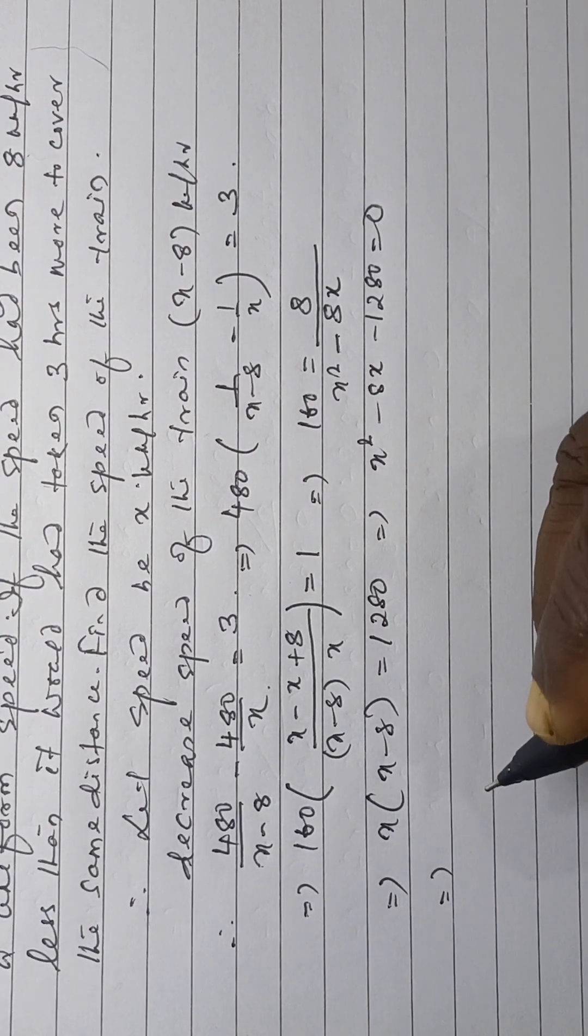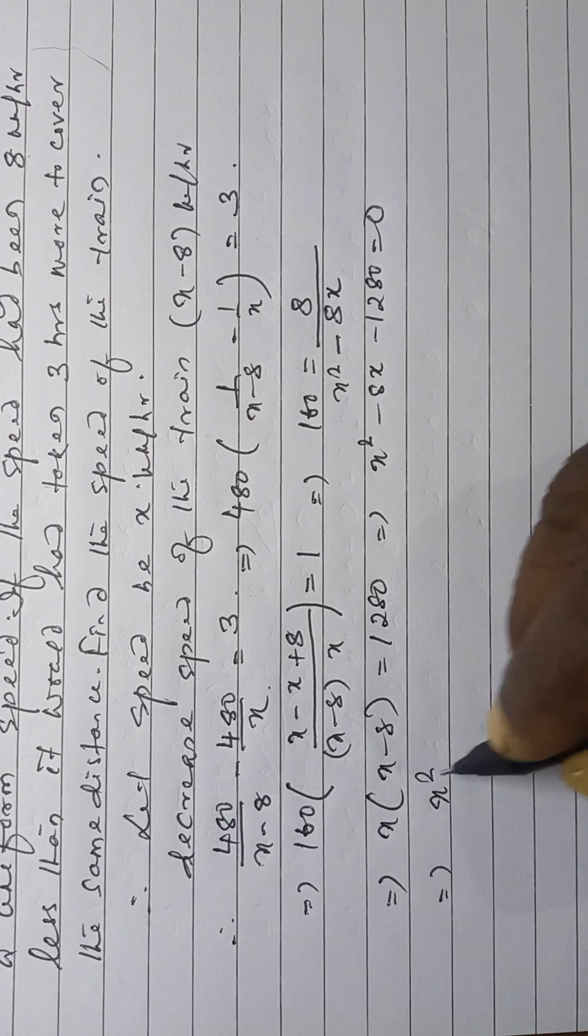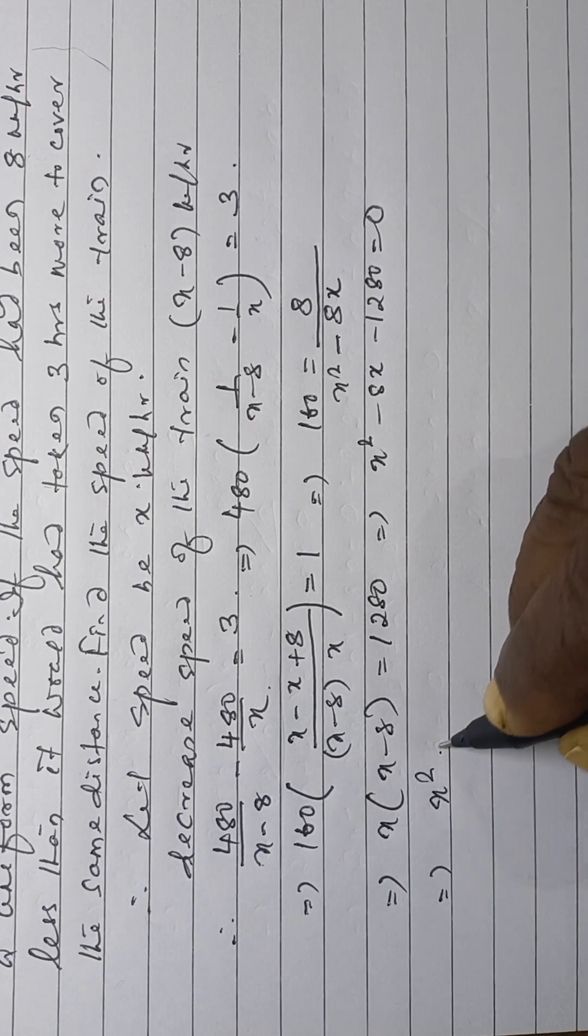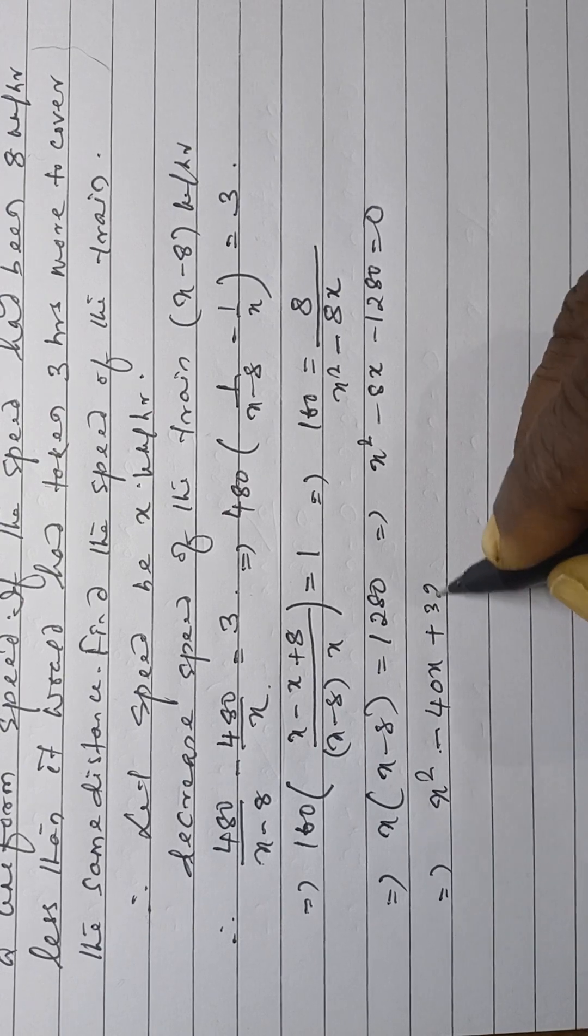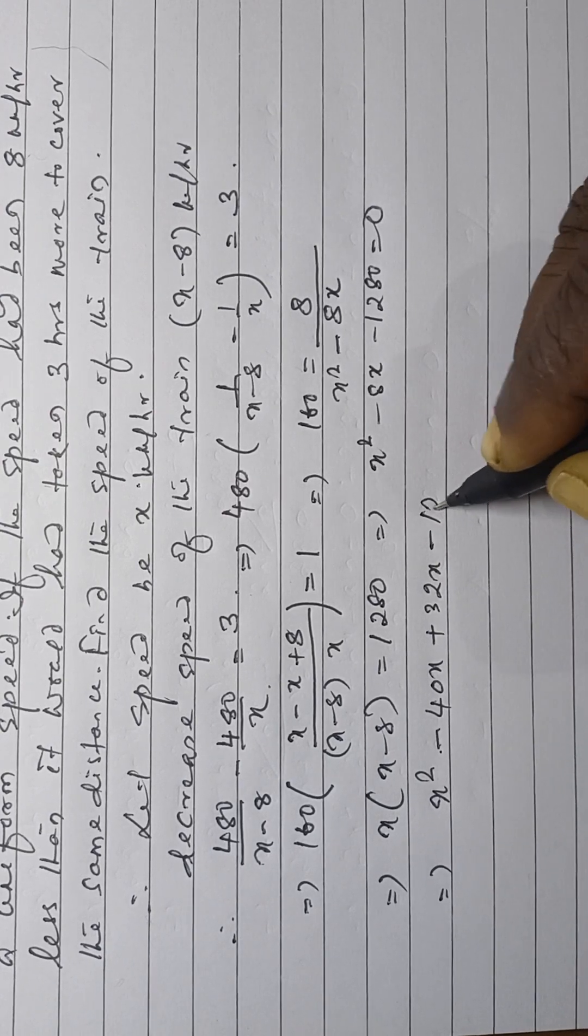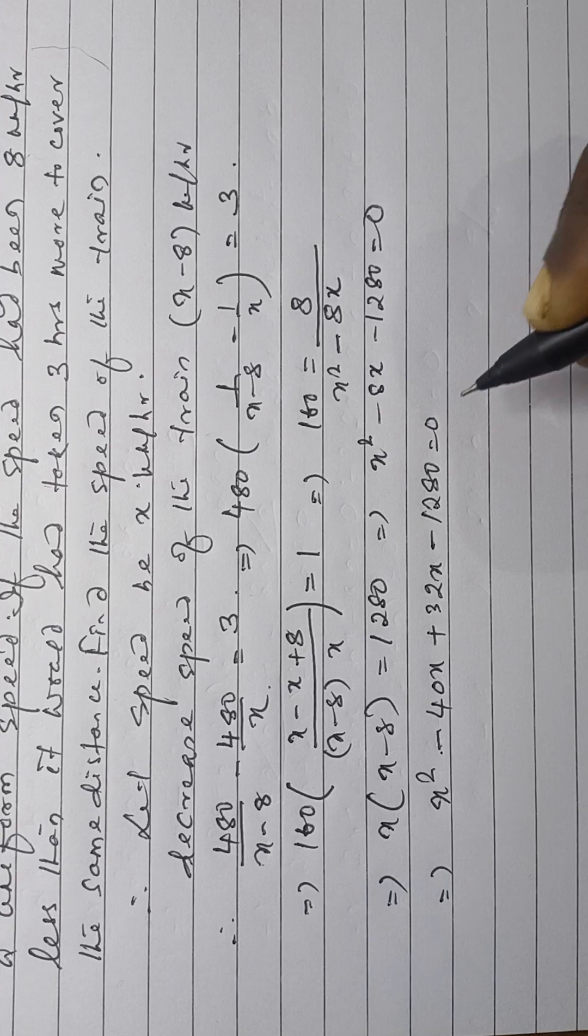By middle term splitting, this is x square minus 40x plus 32x minus 1280 is equal to 0.